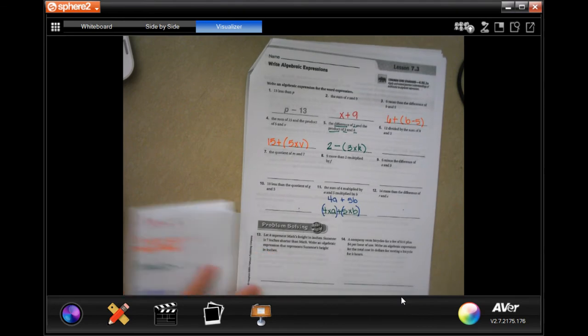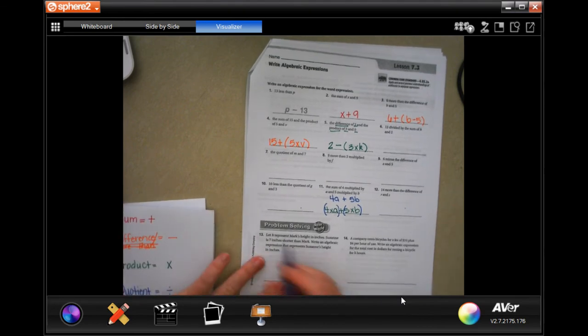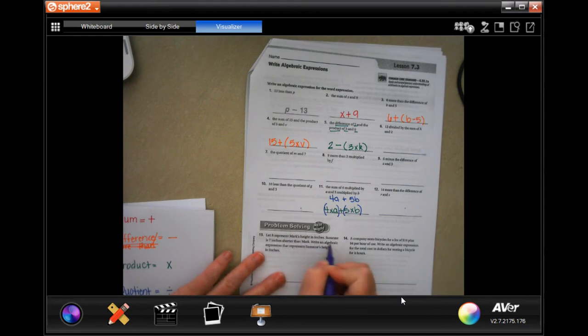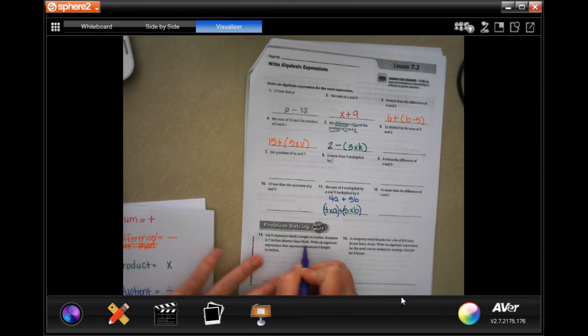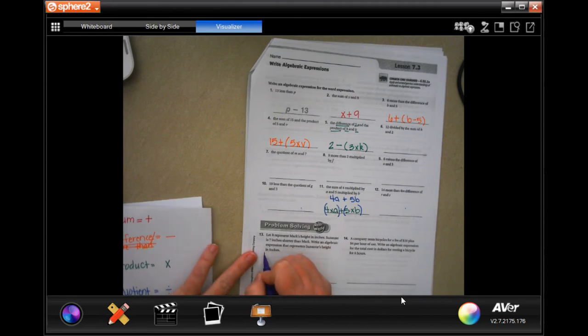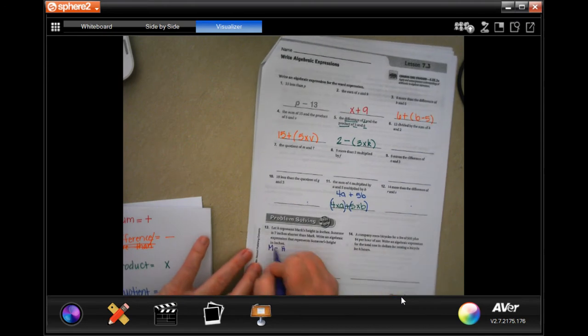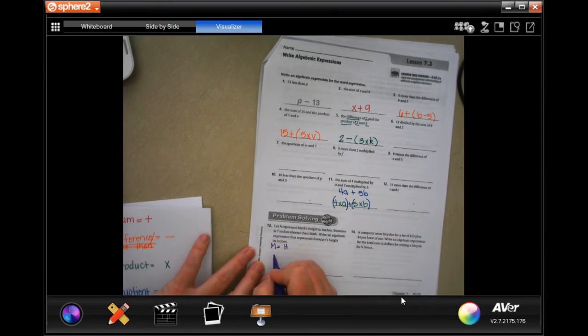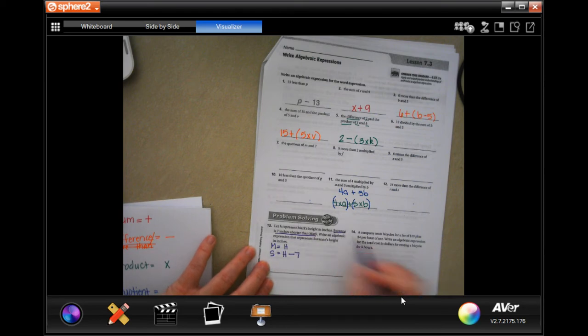You guys can do 12. We're going to go down to 13. And it says, let H represent Mark's height in inches. Suzanne is seven inches shorter than Mark. So Mark is H.